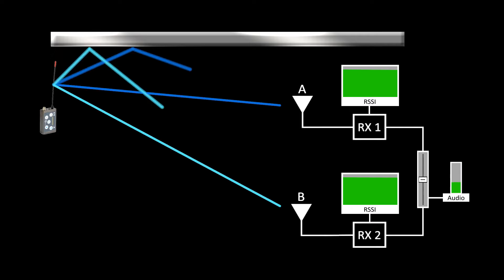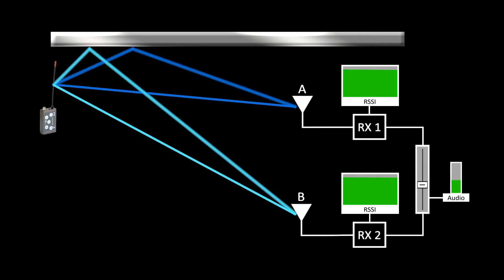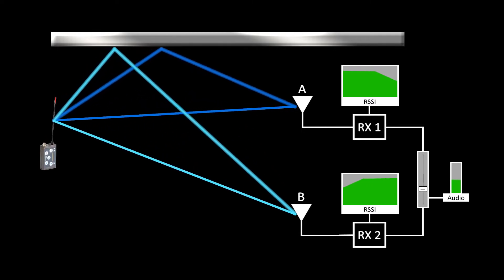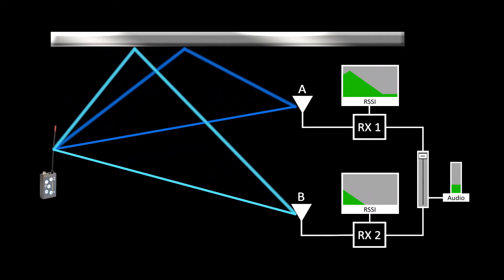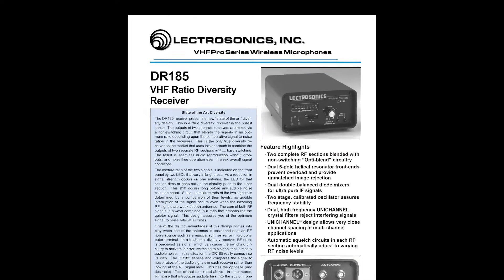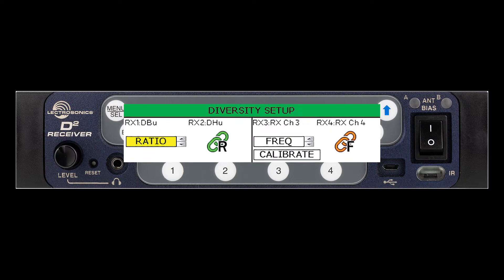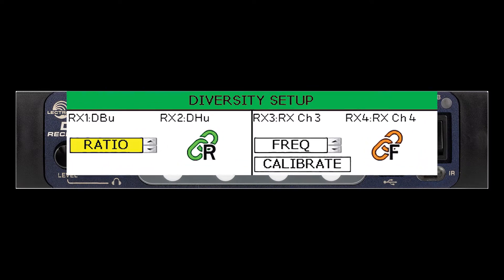With ratio diversity, two receiver channels are used at the same time. In the DSQD, a digital panning circuit continuously mixes the audio in a ratio based on the RF levels and the signal quality at each of the receivers. When both receivers have a strong signal, their audio outputs are mixed together evenly in the digital domain. As the signal level drops, the algorithm shifts emphasis to the stronger channel. If either antenna has at least a minimum required signal level, the receiver will continue to deliver usable audio. Lectrosonics pioneered the ratio diversity method in the 1990s, and we've kept it in our high-end receivers ever since. Now in the DSQD, this is available in a digital receiver.